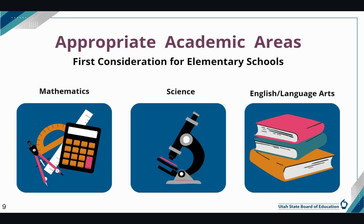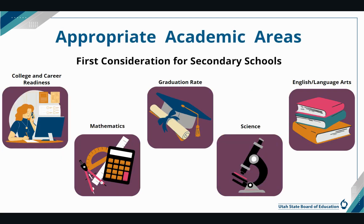For elementary schools, the areas of academic need that receive first consideration are math, science, and English or language arts, which also include reading. In secondary schools, the areas of academic need to receive first consideration include college and career readiness and graduation rate increase, in addition to math, science, and English or language arts.